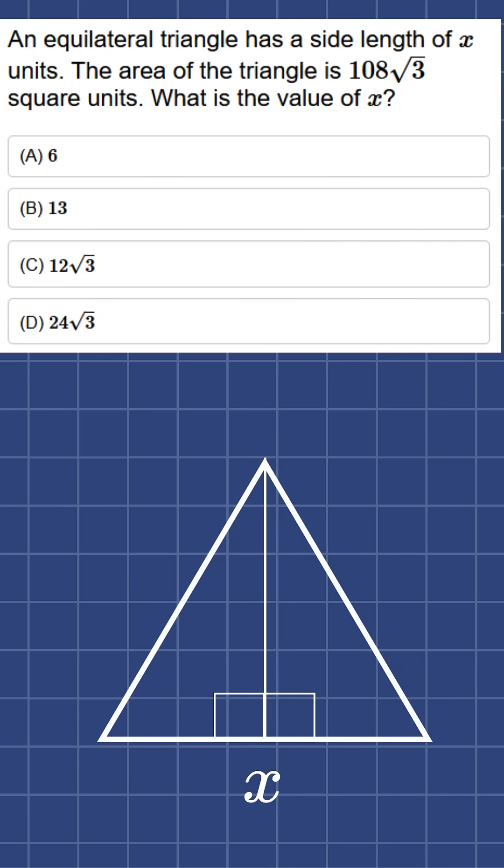In each of these, the base is x divided by 2, the hypotenuse is x, and we can find the height with the Pythagorean theorem.